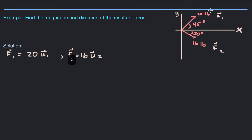So this 20 pounds is going to be multiplied onto a unit vector in the direction of 45 degrees to get the vector that has magnitude 20 pounds and angle 45 degrees. Similarly, we want to multiply a unit vector in the direction of 30 degrees down from the x-axis — so that's often called negative 30 degrees. A unit vector in the direction of negative 30 degrees multiplied by 16 pounds will give us this exact force with 16 pounds magnitude pointing in the direction of negative 30 degrees. So what are these unit vectors?